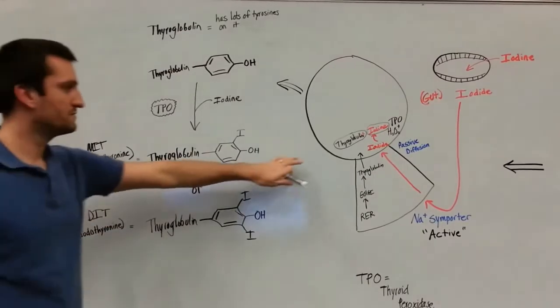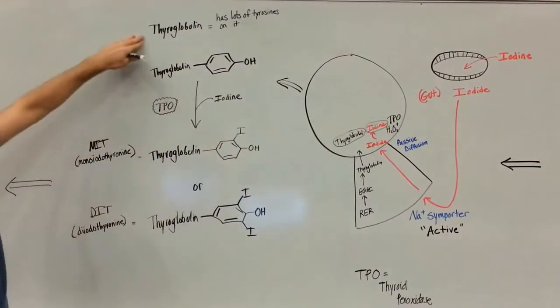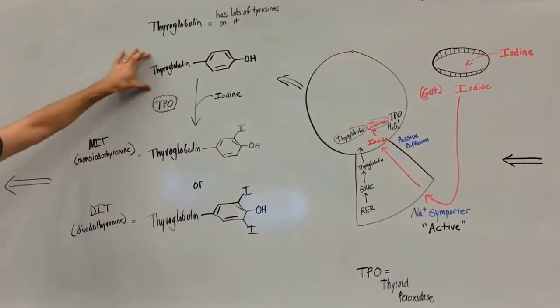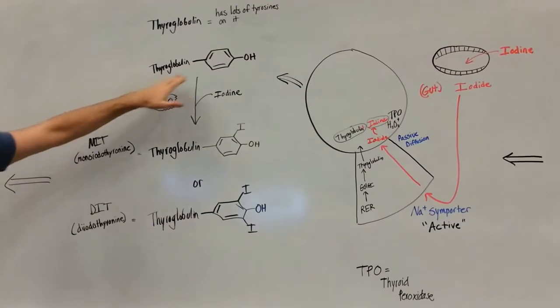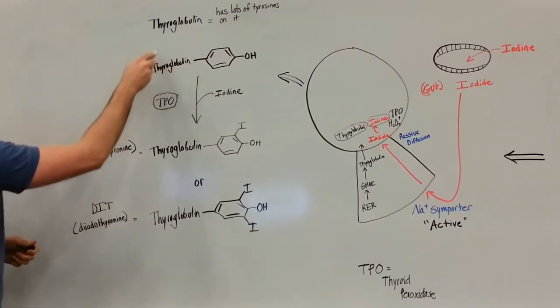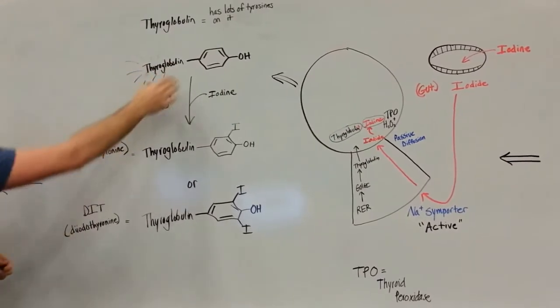So now we're just going to continue on, combining our thyroglobulin with iodine. As I said before, our thyroglobulin has lots of tyrosines on it. Here's a thyroglobulin with only one tyrosine residue on it. Typically you'd have multiple ones. It's a massive molecule. But we're just going to show one little tidbit.